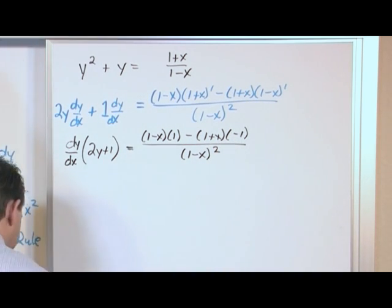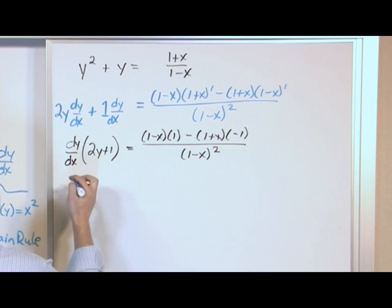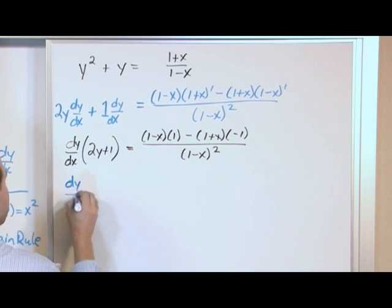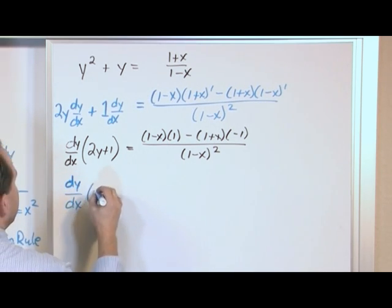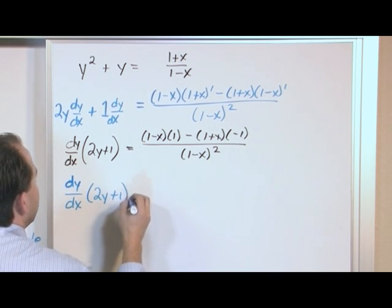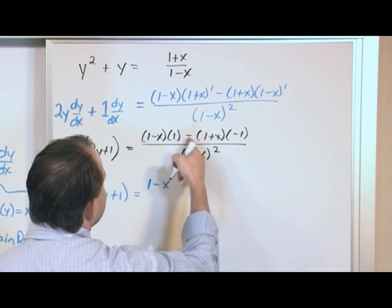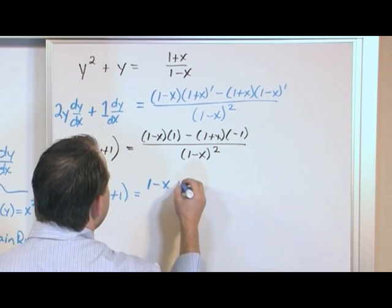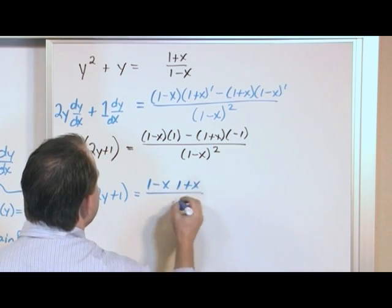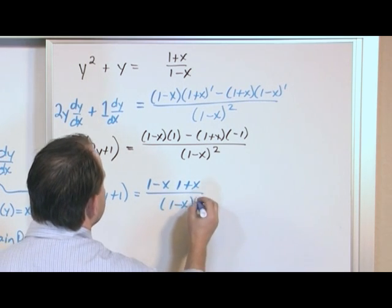So let's go ahead and simplify this just a little bit more. We'll have dy dx 2y plus 1. And then over here, it'll be simply 1 minus x. Here, we're going to distribute in negative times negative positive. So we're going to have 1 plus x just sitting on the top. And then we'll have 1 minus x squared.